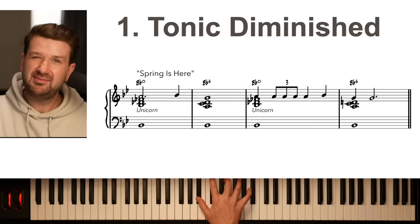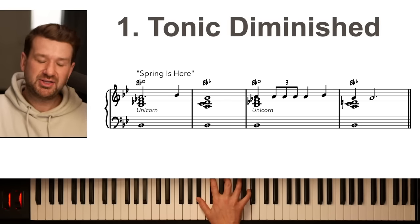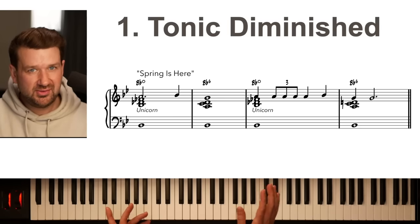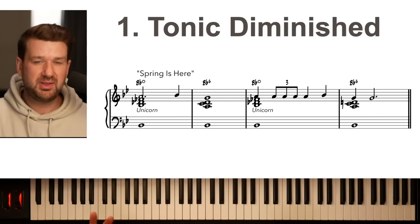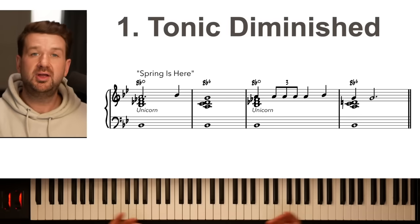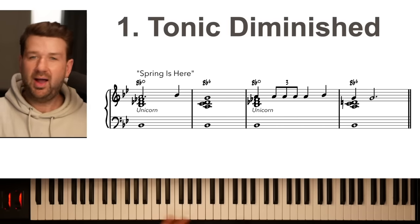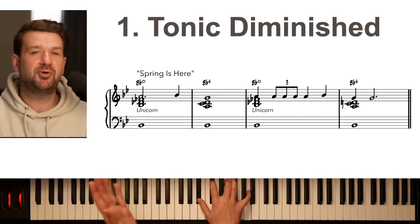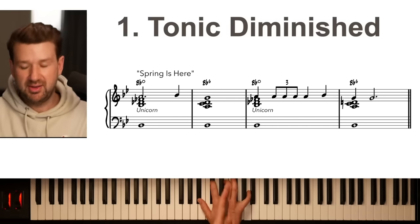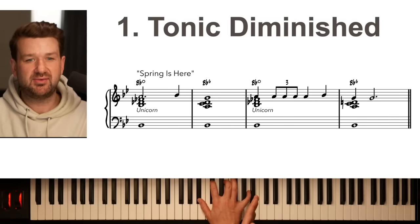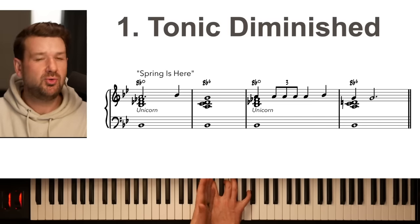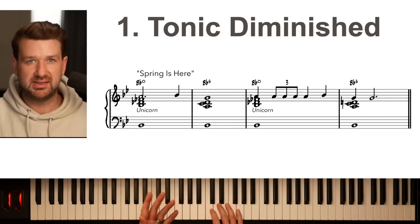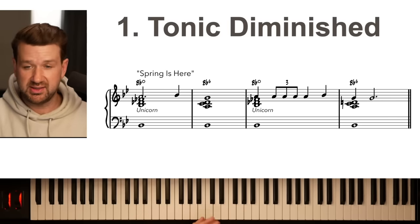And again, you might add a G somewhere in here if you wanted to, which would be like the double-flat seven or whatever. But why just do the regular old diminished triad? Put that major seven on top — the unicorn chord. It's a beautiful voicing resolving to itself specifically.